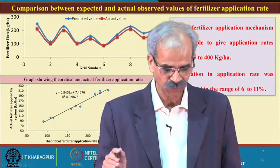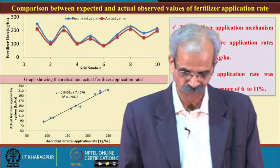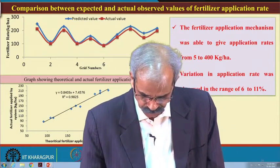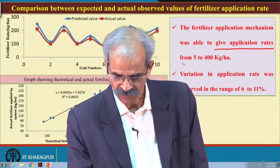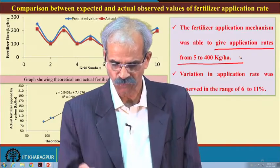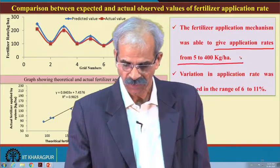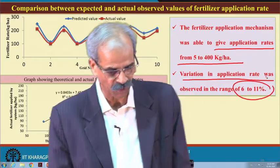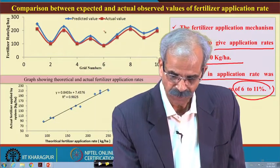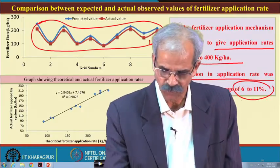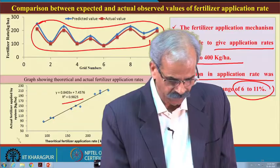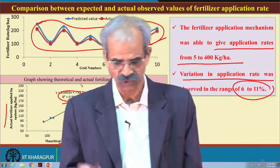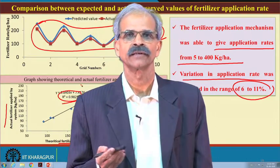When we compare the output, we find that our fertilizer application system is in a position to give application rates as low as 5 kg up to about 400 kg per hectare, covering smaller seeds as well as high application rates, with very small variation. The predicted and actual graphs show a very good R-squared value, confirming that the system has worked well and there is great promise for this technology. Thank you very much.